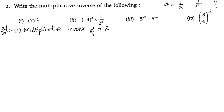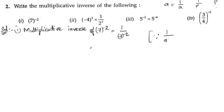7 to the power of minus 2. That means we are going to get 1 by 7 to the power of minus 2. When we are having a negative in the denominator, it comes to the numerator. The formula is: 1 by A to the power of minus N equals A to the power of N.